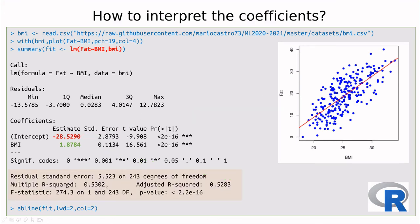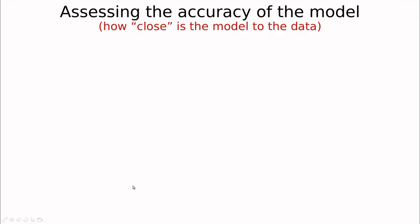R also provides additional information. Here is the most important information. You can see here R squared, and I'm going to explain that later. The p-value, which is a measure of how significant is this fit.